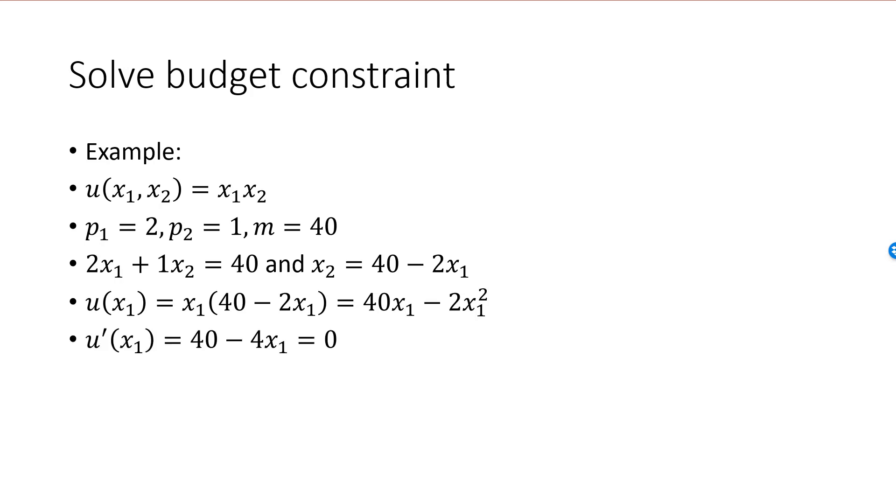u prime x1 is equal to 40 minus 4x1, and this needs to be 0. The solution to this equation is x1 is equal to 10, and we have the same solution. x1 star is equal to 10, and x2 star is equal to 20 from the budget constraint.